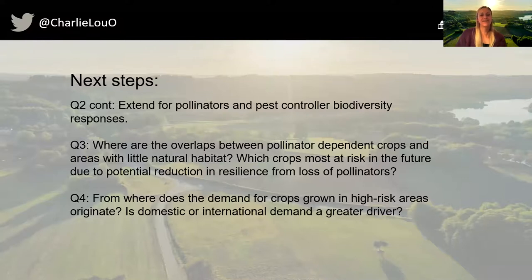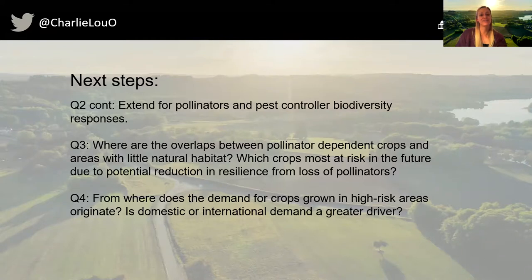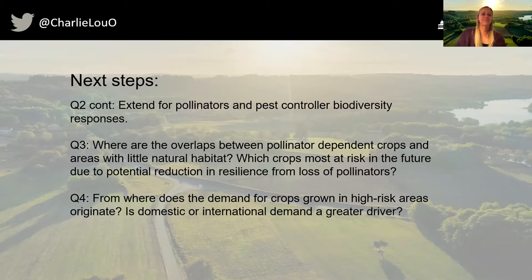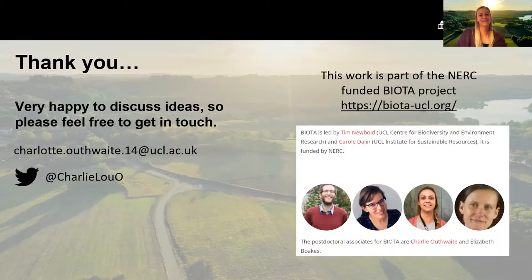These are very preliminary investigations so far, and I'd like to take this work further. I'll be looking at similar responses for pollinator and pest controller biodiversity specifically. I would also like to look into which crops might be most at risk, and also where the demand for the crops produced in high risk areas is coming from. But if you have any ideas on how I could take this forward, I am all ears. Thank you very much for listening.